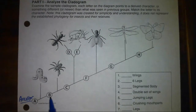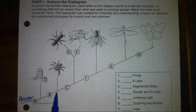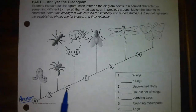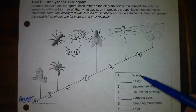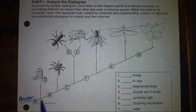Same thing with trait C. This organism here would have trait B because it branches off after trait B evolved, but before trait C, so it would not have trait C. With that in mind, I want you to match up these characteristics over here to where they might be on this cladogram.